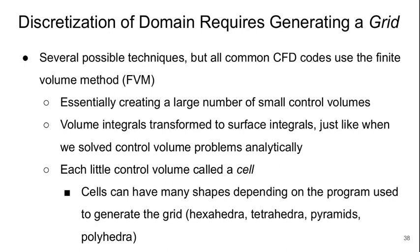There are several possible techniques for doing this, but all common CFD codes use something called the finite volume method. This essentially involves dividing up the computational domain into a large number of small control volumes. The volume integrals are then transformed to surface integrals, just like when we solve the control volume problem analytically. Each little control volume we call a cell. The cells can have many shapes depending on the type of program being used to generate the grid — they can be hexahedral, tetrahedral, pyramids, or polyhedrons.